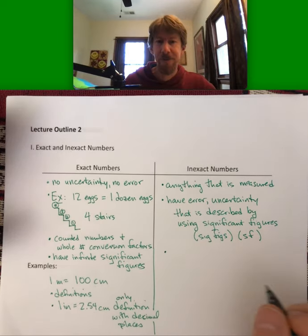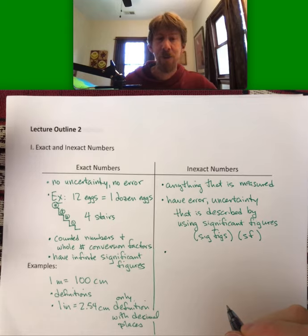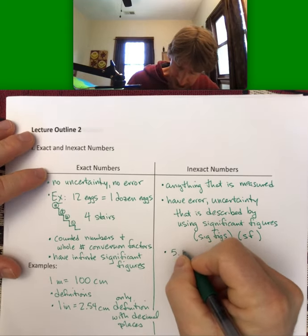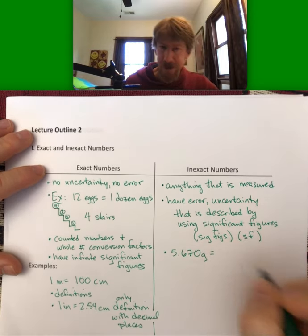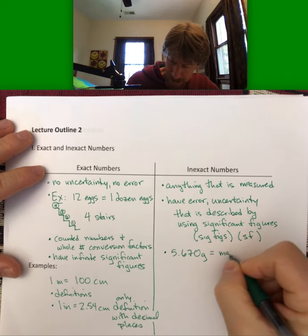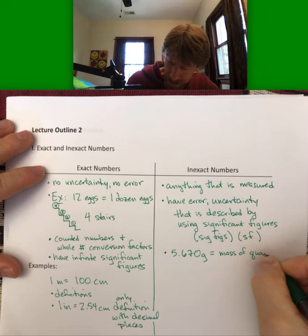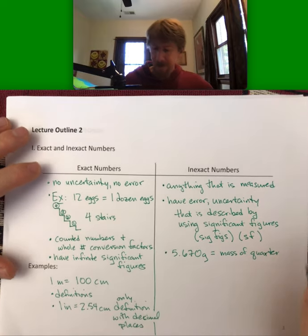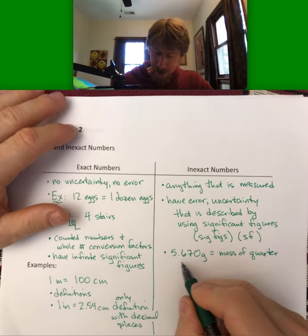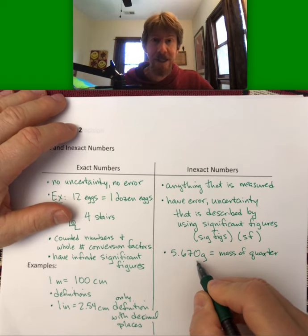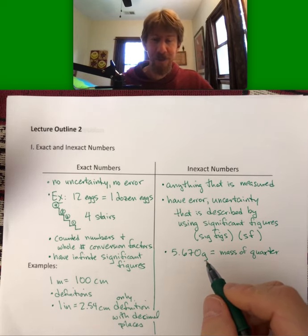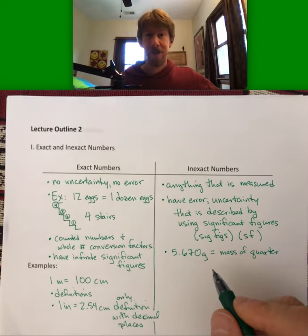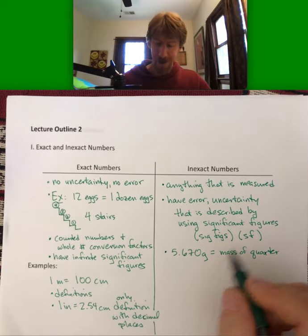An example of an inexact number: if you weighed a quarter and said that is 5.670 grams — that's the mass of a quarter. You probably used a scale with three decimal places. Scales with four decimal places would give even more accurate information, with less error and less uncertainty. This leads us to talk about accuracy and precision.